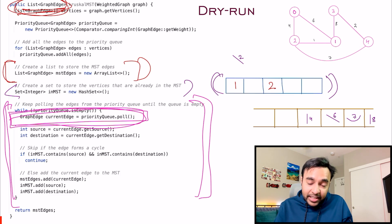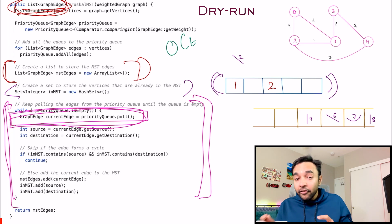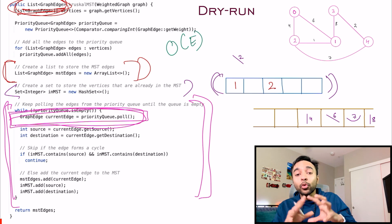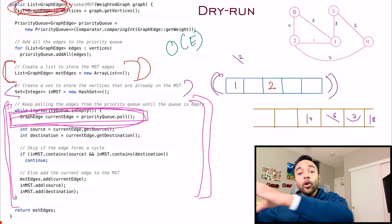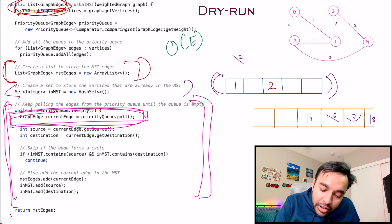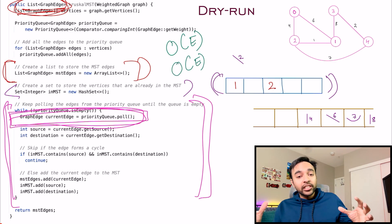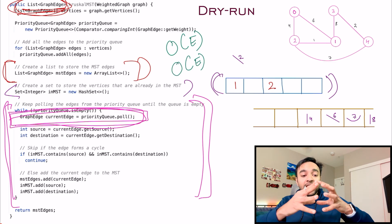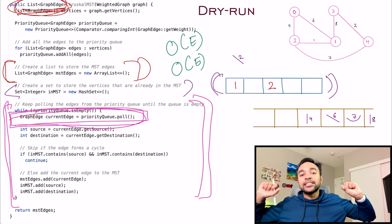The time complexity of this solution is O(E), where E is the total number of edges in the graph, because in the worst case you may have to go over all possible edges. The space complexity is also O(E), because in the worst case you need a priority queue to store all of your edges.